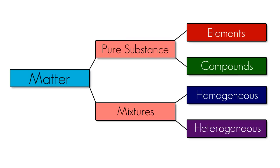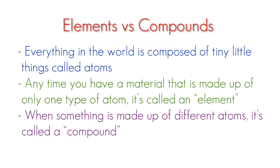So what's the difference between an element and a compound? Let's take a look at this slide. Basically, everything in the world is made up of these tiny little things called atoms. Just imagine these things as tiny little balls. Anytime you have a material that is made up of only one type of these balls, it's called an element.